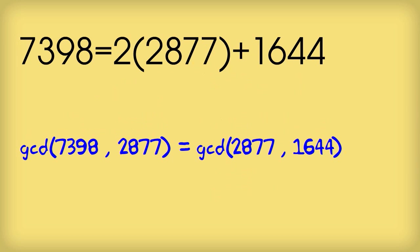Now this is substantial progress, because it's turned the problem of the GCD of 7398 and 2877 into a GCD using smaller numbers, in this case 2877 and 1644. So it's a little bit easier.